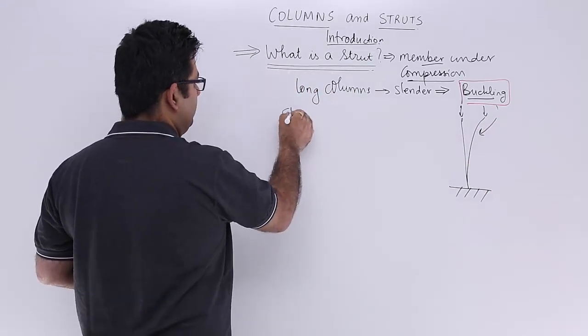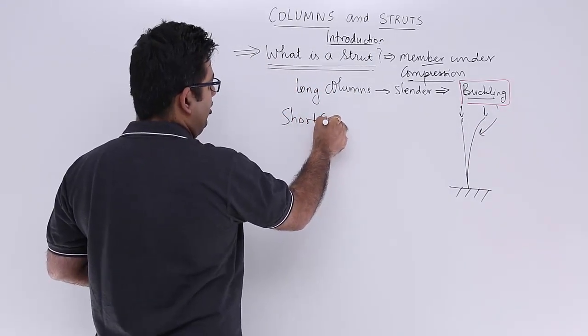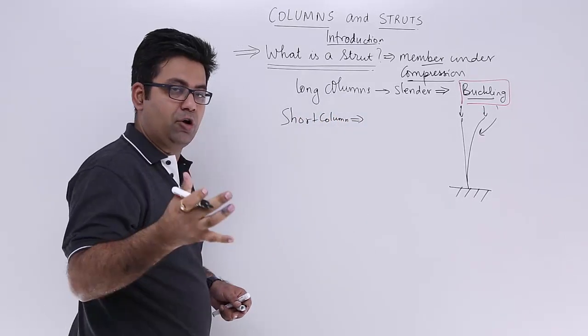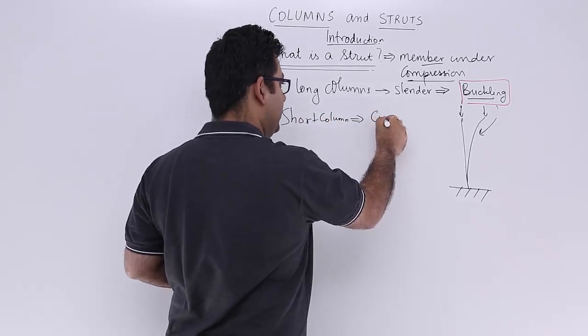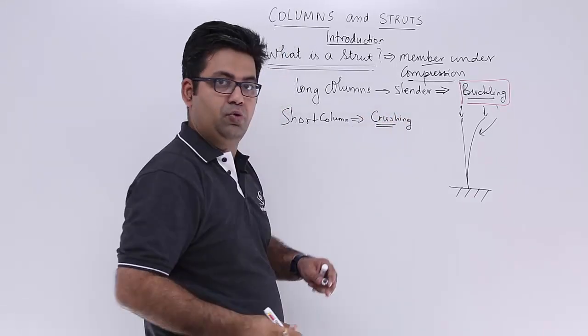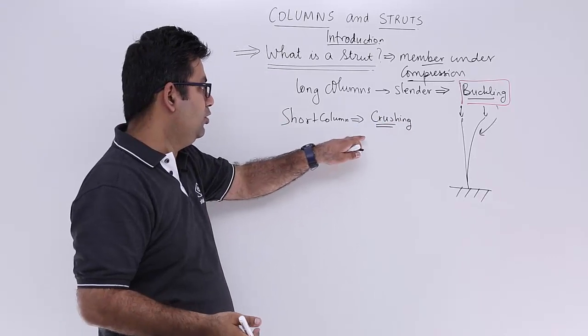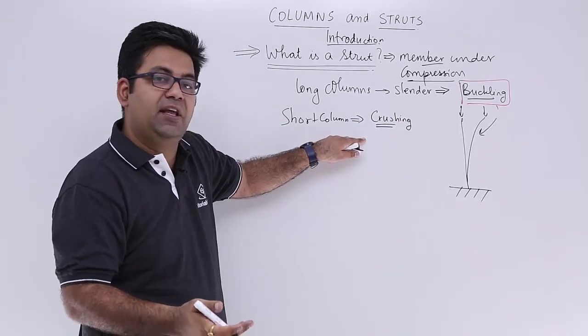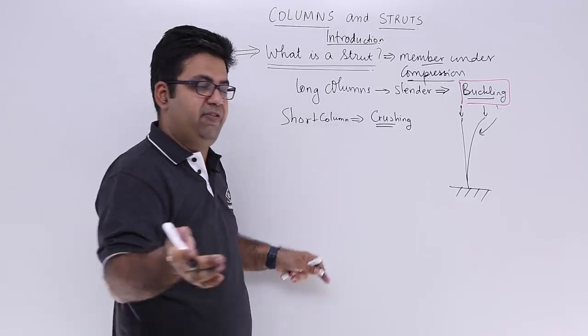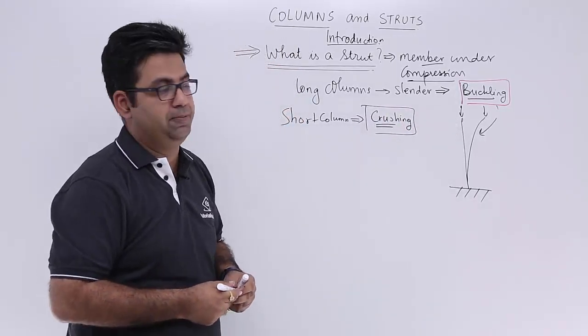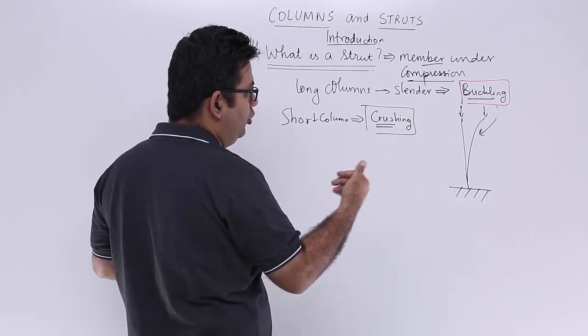If you have a short column, then this kind of column will fail via crushing. You crush it out—they don't bend. Short columns will not bend appreciably, but they will first fail by crushing only, so there is no need for them to be bent.